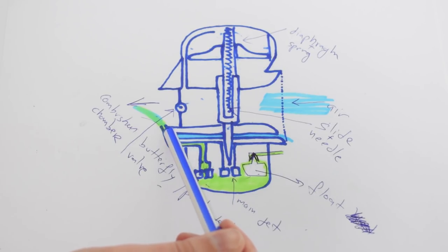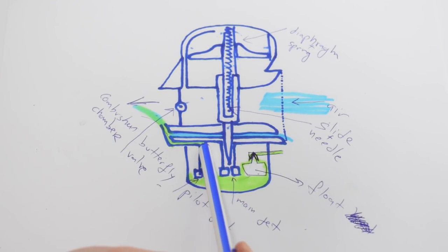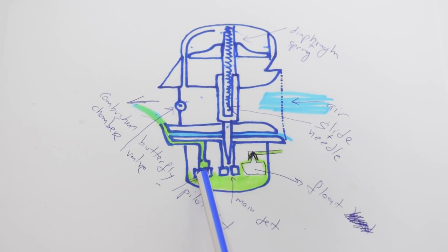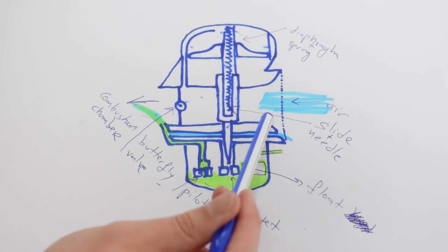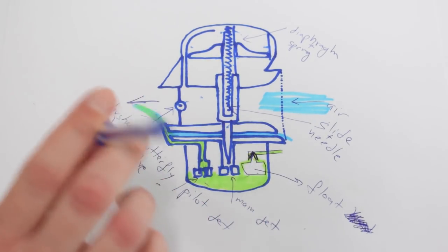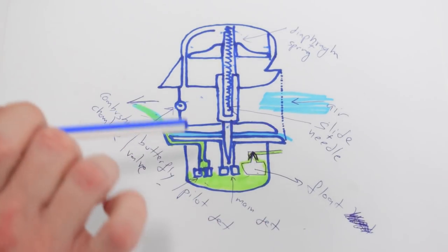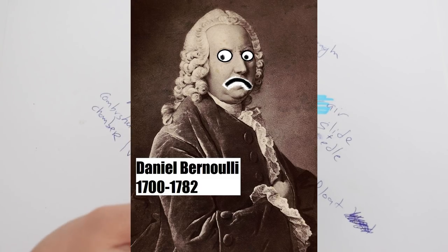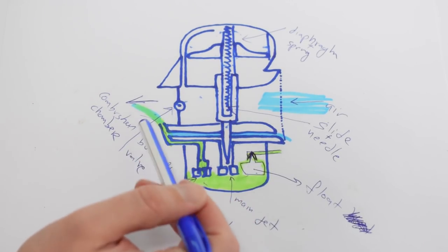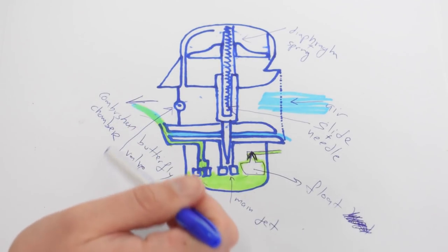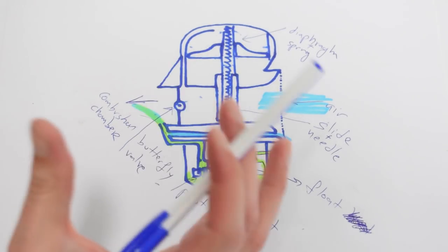Now this little passageway is connected to the passageway of the pilot jet. Now during idle the Bernoulli principle we mentioned earlier isn't really doing anything.